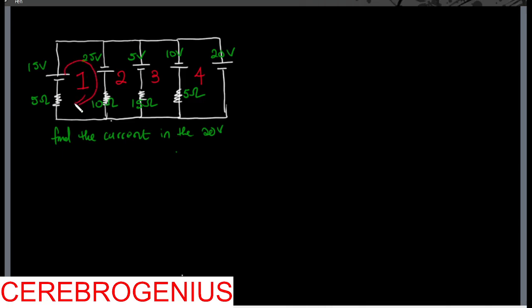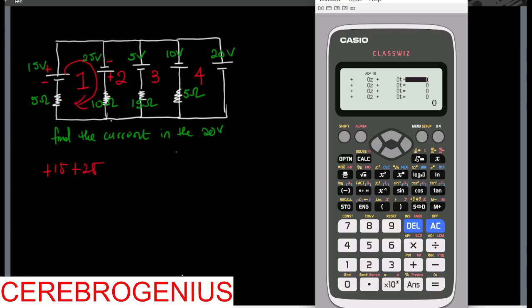Going this way, I will have plus fifteen plus twenty-five — because here I'm moving from negative to positive, and here I'm moving from negative to positive. So I'm moving the same way in both cases. So we have fifteen plus twenty-five.